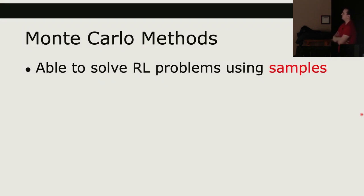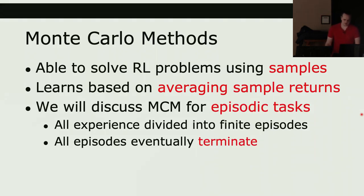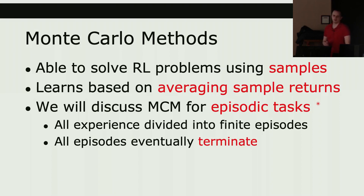In reinforcement learning, Monte Carlo methods learn by averaging sample returns. We generate samples, see the rewards, sum them to get returns, and average those returns over many episodes. We'll discuss Monte Carlo methods for episodic tasks, where all experience is divided into finite episodes that eventually terminate. The algorithm only works for episodic tasks because it requires summing everything for a particular episode — if the episode doesn't end, the method won't work.